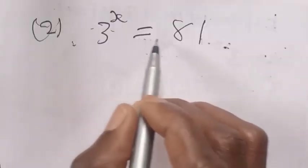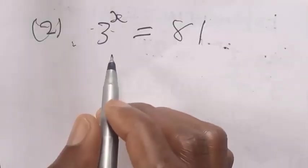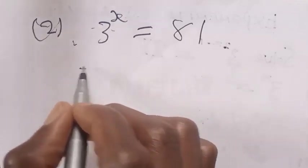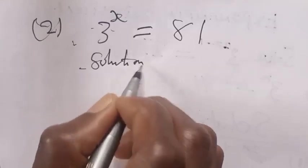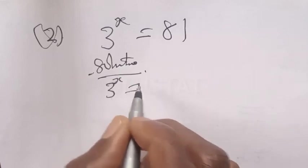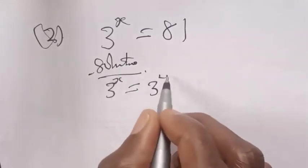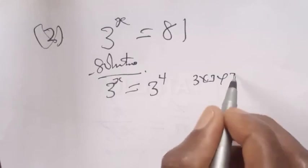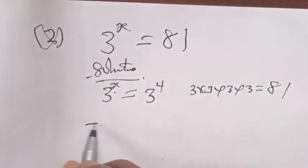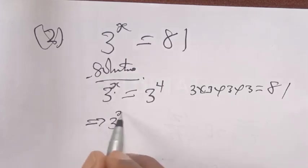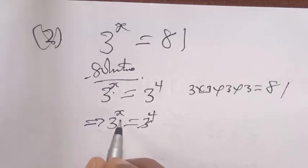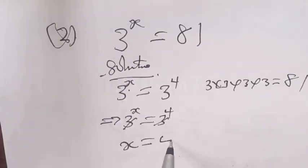Question number 2 says: 3 raised to power s is equal to 81. This is an exponential equation also. Solution: we express 81 as 3 raised to power 4, because 3 times 3 times 3 times 3 is equal to 81. So we have 3 raised to power s is equal to 3 raised to power 4. They have the same base, so we cancel the bases, and s is equal to 4.